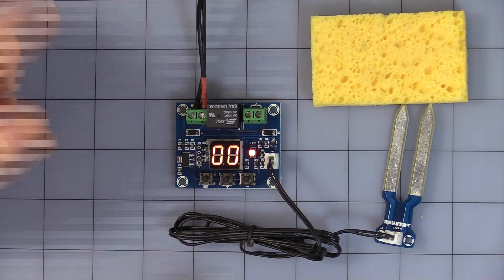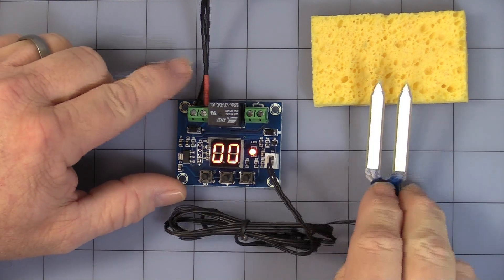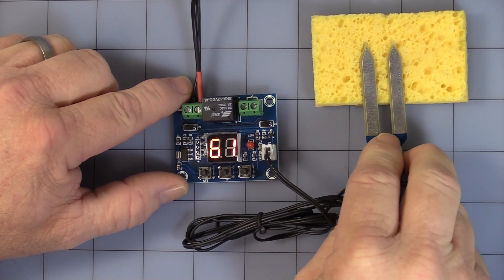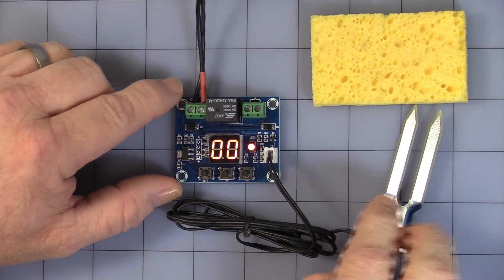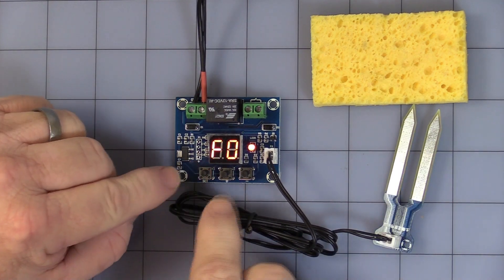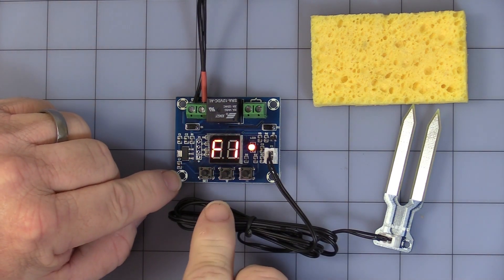To set the on value, you press the set button again, then hit the plus sign once. Then you get F1. This is where the relay turns on.